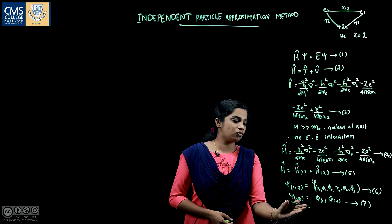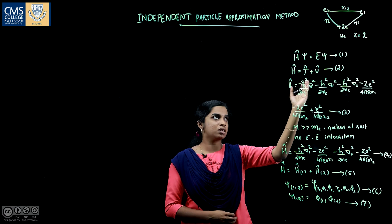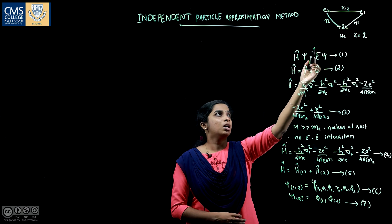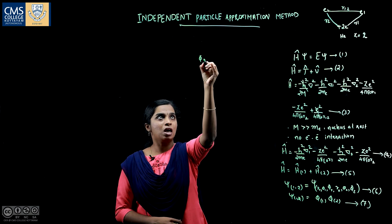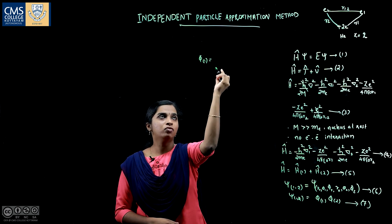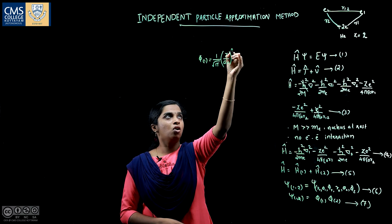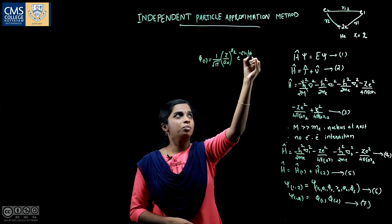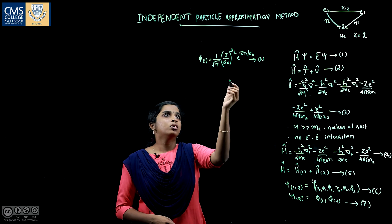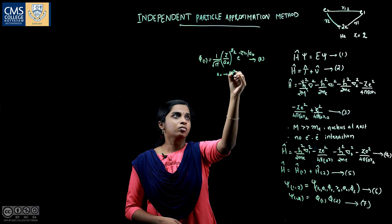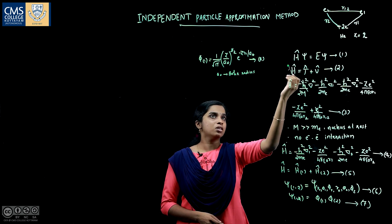Since the Hamiltonian and wave functions are hydrogen-like, I write the one-electron wave function for electron 1 as: φ₁ = (1/√π)(Z/a₀)^(3/2) · e^(−Zr₁/a₀), where a₀ is the Bohr radius and r₁ is the distance between electron 1 and the nucleus.